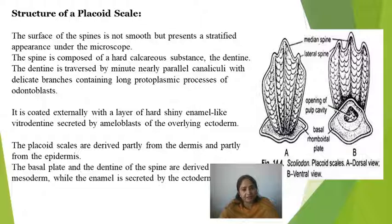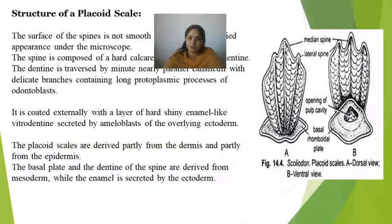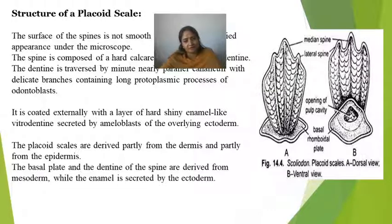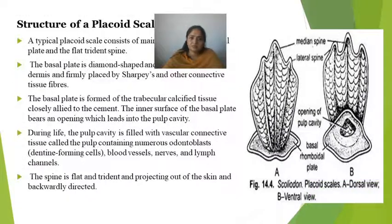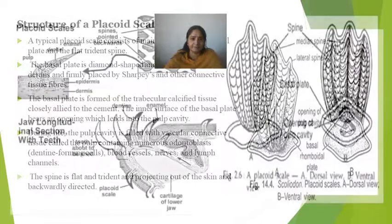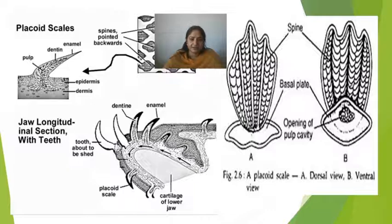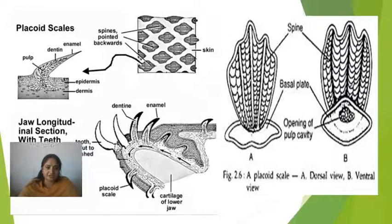Placoid scales are derived partly from the dermis and partly from the epidermis, similar to the tooth development program. They are ecto-mesodermal in origin. The enamel-like vitrodentine is developed by mesodermal cells, and is secreted by odontoblast or amyloblast-type cells.